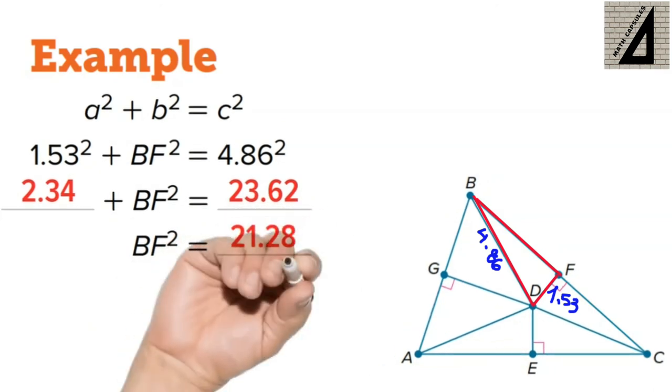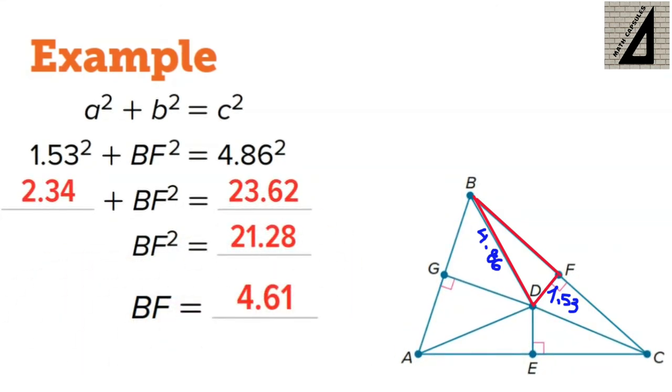So, BF is one of the legs, and we have the hypotenuse is 4.86, and 1.53 is the other leg, so we can find BF by Pythagorean theorem which would be 4.61.